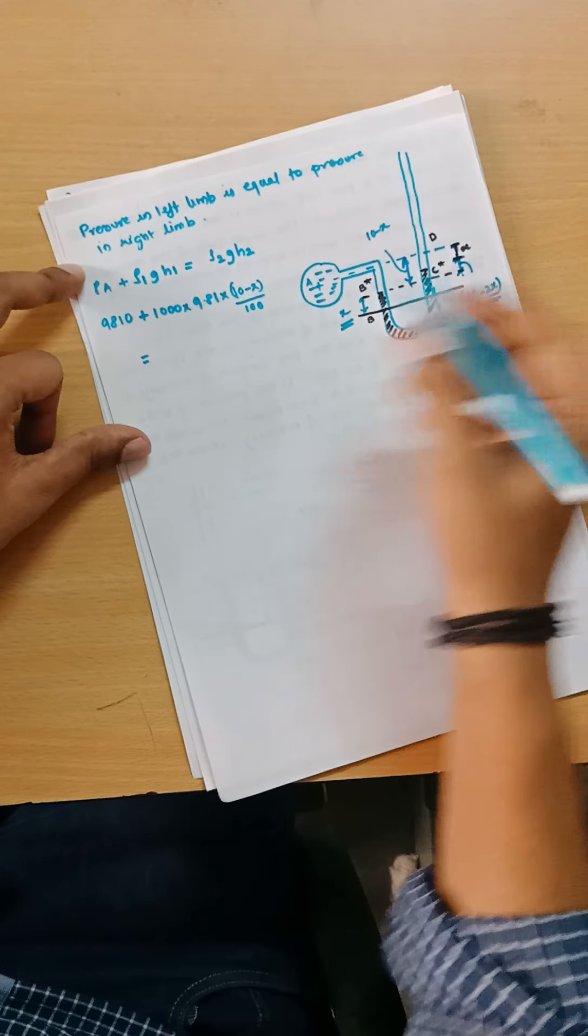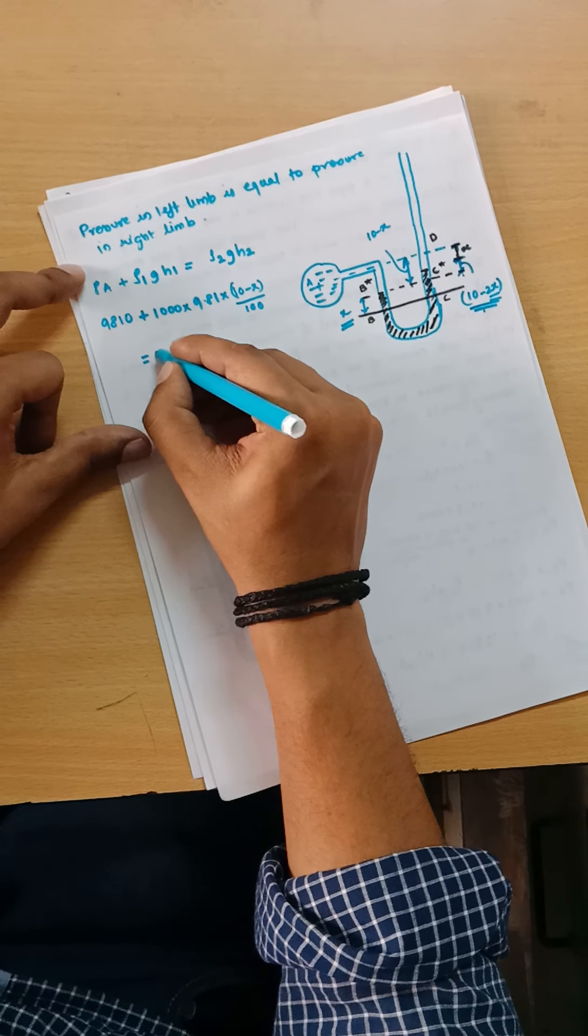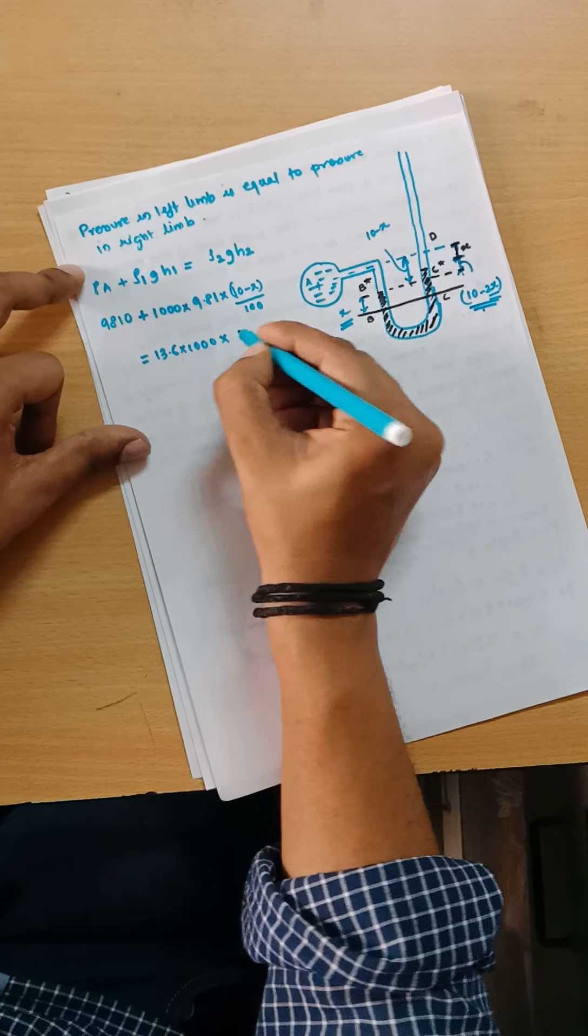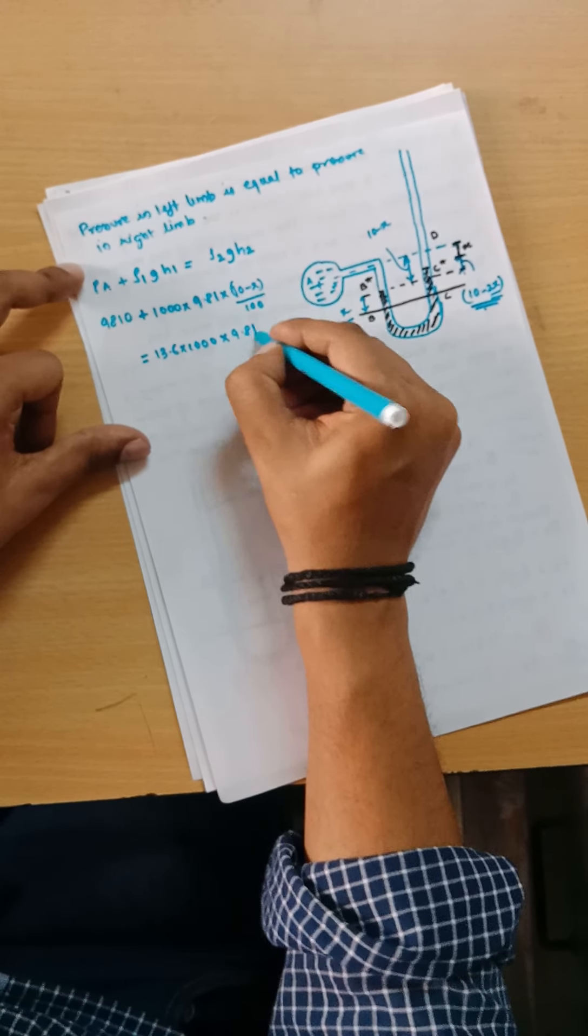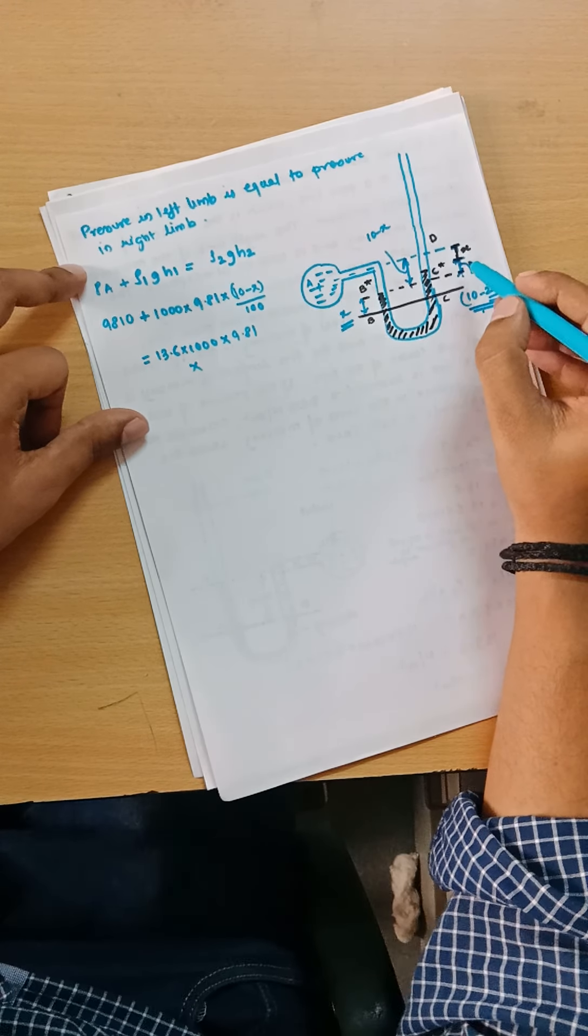One more important thing: this value of 10 is in terms of centimeters, so we need to convert it into meters. We will divide this value by 100. After that, this will be equal to the pressure created in the right limb.